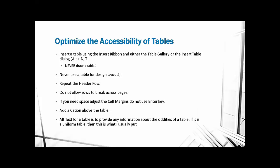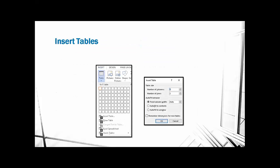This slide shows the two ways to insert a table: the image on the left shows the table gallery — accessible, and you can choose column and row numbers directly. For larger tables, use the Insert Table dialog. The keyboard commands are Alt+N for Insert ribbon, T for Table, then I for Insert Table dialog, or start selecting cells for columns and rows from the gallery.